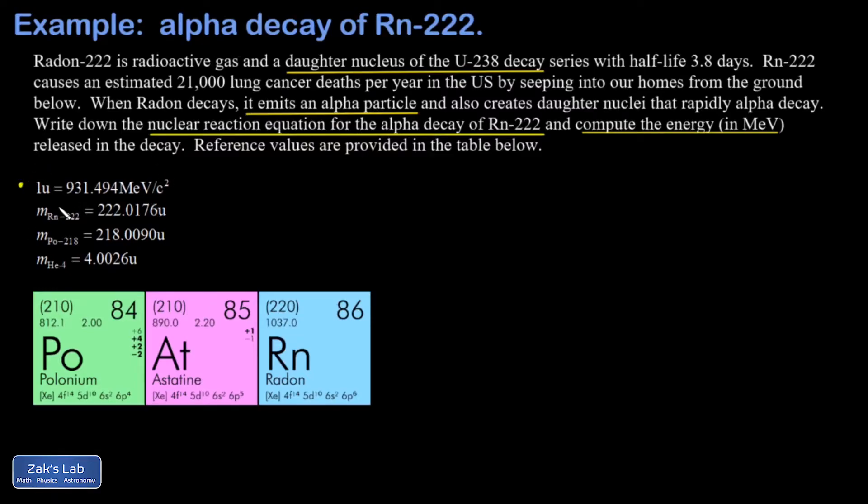The reason we need that is because the standard tables for these masses—the mass of radon, polonium, and helium—give these masses in terms of atomic mass units. We're going to want to convert those to MeV per c squared at some point in order to get our energy calculation done.